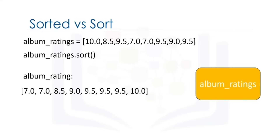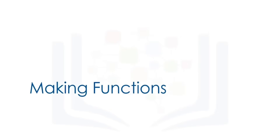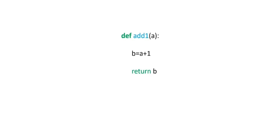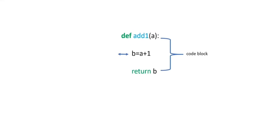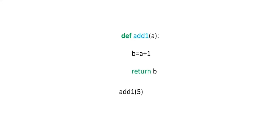Now let's see how to build our own functions. This is an example of a function in Python that returns its input value plus one. To define a function, we start with the keyword DEF. The name of the function should be descriptive of what it does. We have the function formal parameter A in parentheses, followed by a colon. We have a code block with an indent. We add 1 to A and assign it to B, then return the value for B. After we define the function, we can call it. The function will add 1 to 5 and return a 6. We can call the function again and assign it to the variable C. The value for C is 11.